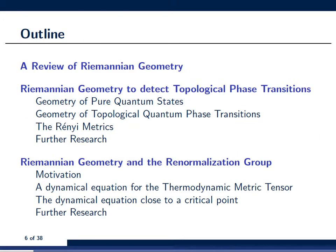Here is a brief outline of my talk. I am first giving a review of Riemannian geometry, then diving right into the physics. I will explain how Riemannian geometry can be used to detect topological phase transitions first at zero temperature — this is the work by Zanardi and Castelnuovo — and then I suggest a way of generalizing this work to finite temperatures. In the last part of the talk, I will explain how Riemannian geometry can be linked to the renormalization group process.